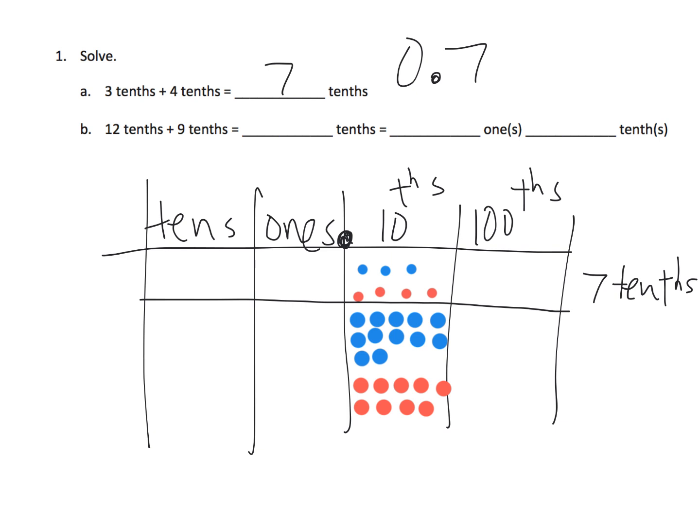And so now, we know that any time you have 10 of something, you can cash it in for 1 in the next column over. So here we've got 10 tenths. So we can cash those in for a 1. And then down here, we know we have 9 plus 1 more. So I'm going to do 9 plus 1 more. And that equals a 1 whole.